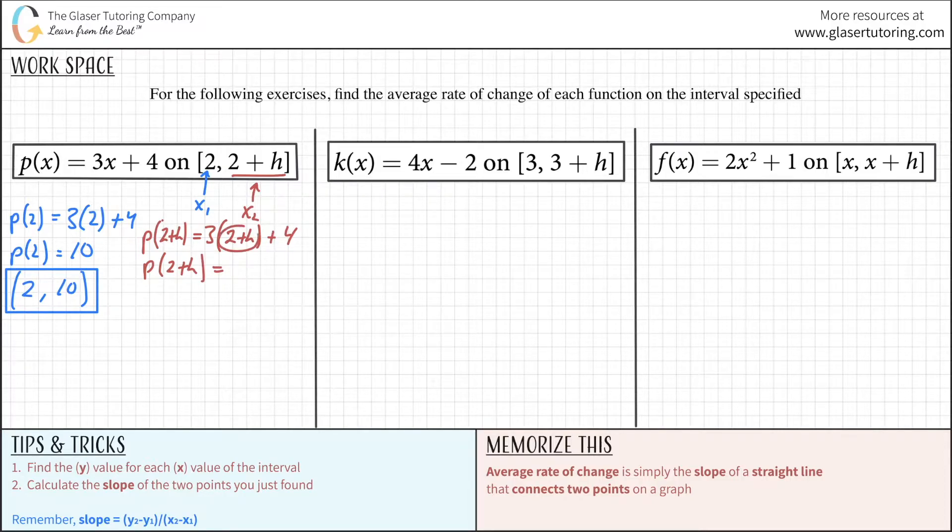And now, why don't we just simplify for right now? So, this is p(2 + h) equals, so then we distribute the 3 to each piece inside the parenthesis. So, this would give us 6 + 3h, then plus 4. And I can combine the 4 and the 6. That would give me a total of 10. So, what I'm going to do is I'm just going to erase this and just write 10 + 3h. All right, so this is indeed the y value.